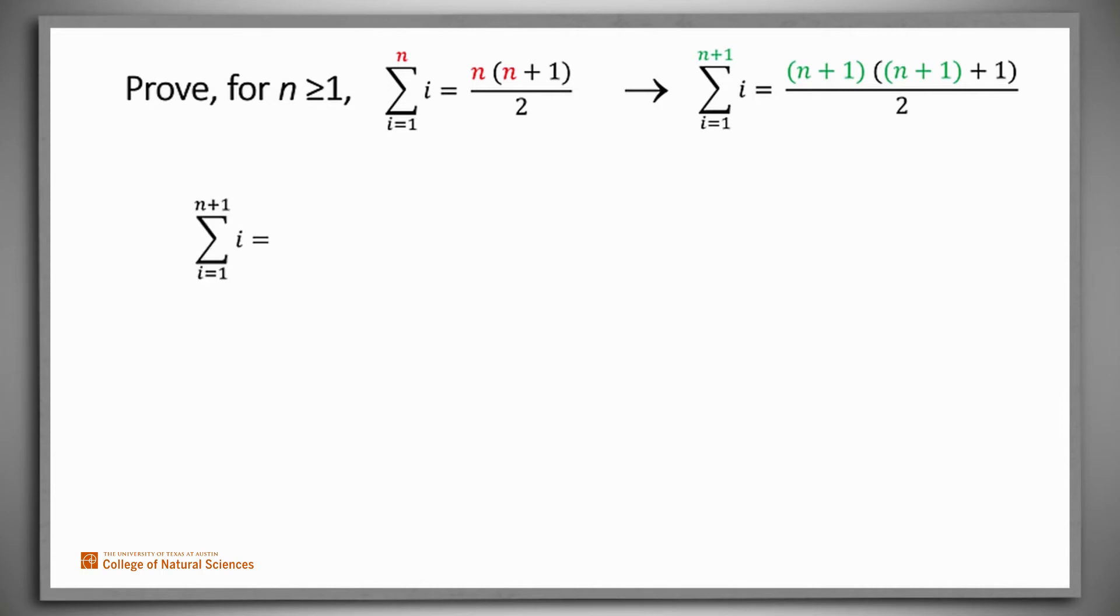The sum of the first n plus 1 positive integers is the sum of the first n of them plus the last one. What do we know about the sum of the first n of them? Well, from the induction hypothesis, we know that it's n times n plus 1 over 2. So we rewrite it as that, and of course, we still have to add in the n plus 1 term.